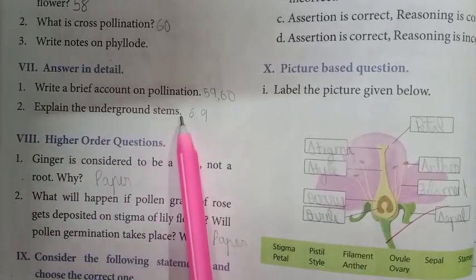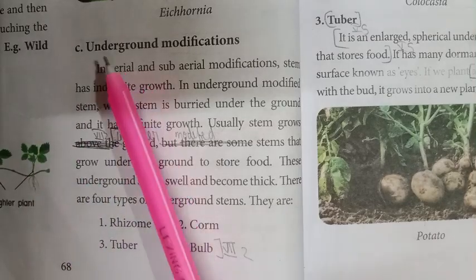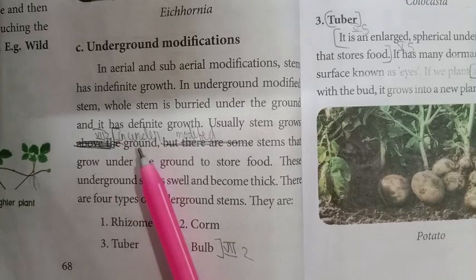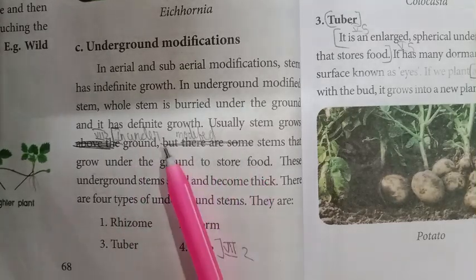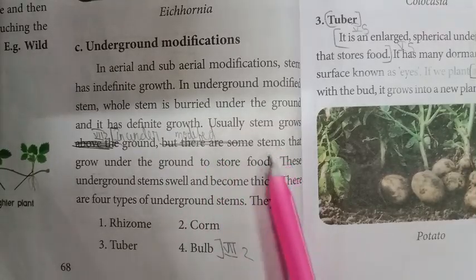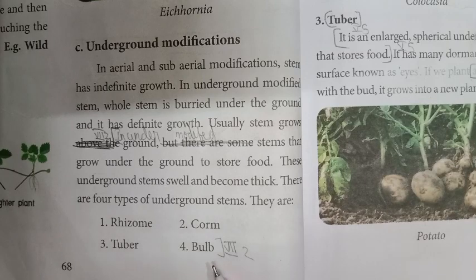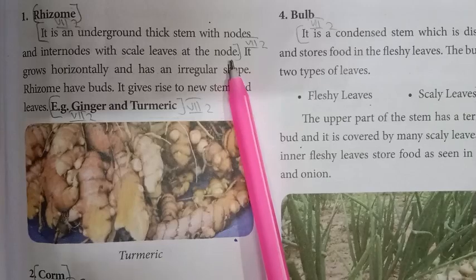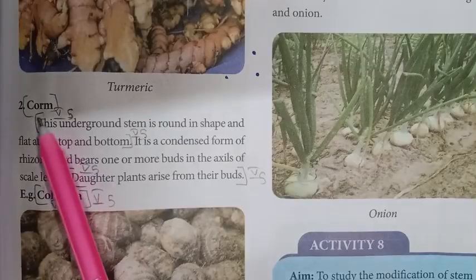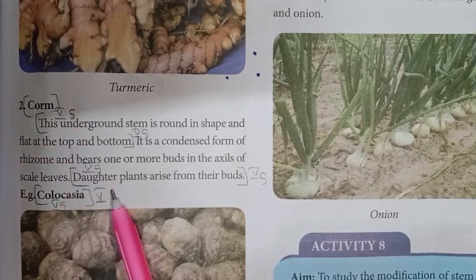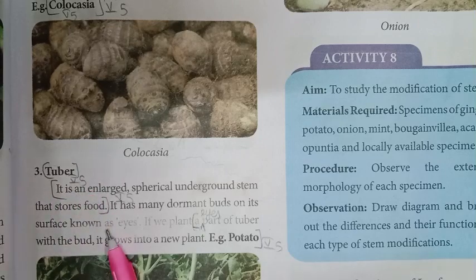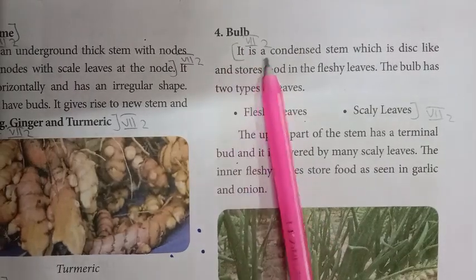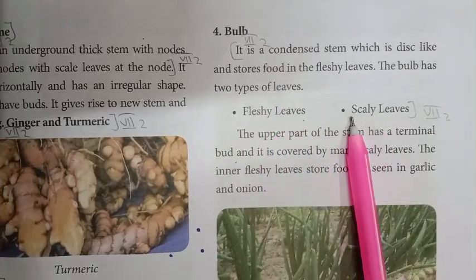Second detail question: Explain the underground stems. Refer to page number 68, right side, under the heading 'Underground Modification.' From the fifth line — 'above the ground' — going into underground modified stems, start and mark the last fourth point — bulb. Then page 69, first line — 'it is an underground...' — start, add note, and mark. Then third point — tuber — mark the small questions similarly. For bulb, under the heading, first line — 'it is a condensed...' — start, mark two points.